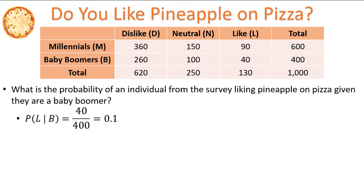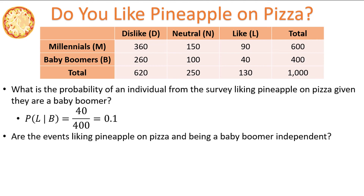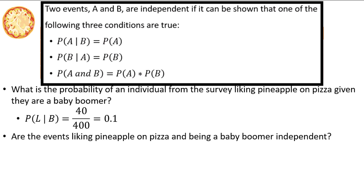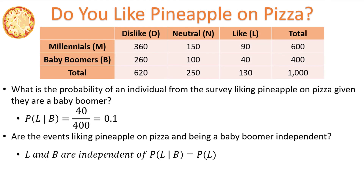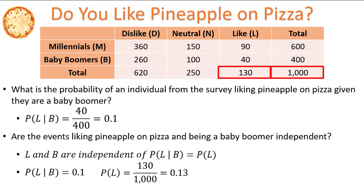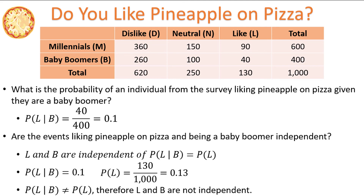We can also prove independence using a contingency table. For example, are the events liking pineapple on pizza and being a Baby Boomer independent? Remember that there are three ways to prove independence. Typically the first or second way is easier when working with a contingency table. In this case, the events L and B are independent if the probability of L given B equals the probability of L. We already found the probability of L given B in the last question, which is 0.1. The probability of someone liking pineapple on pizza from the survey is 130 out of 1,000, which equals 0.13. Since 0.1 is not equal to 0.13, the events liking pineapple on pizza and being a Baby Boomer are not independent.